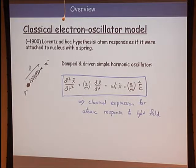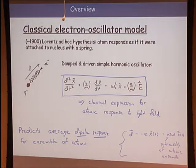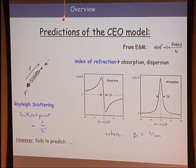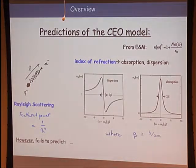This gives us a damped and driven simple harmonic oscillator equation. This simple model accounts for many phenomena, especially off-resonance ones. It predicts the average dipole response from an ensemble of atoms. From the displacement of the electron and classical E&M, we can derive the dipole moment, the polarizability of the atomic ensemble, and from that the index of refraction. The model also predicts absorption, dispersion, and phenomena like Rayleigh scattering—where scattered power goes as one over lambda to the fourth, scattering blue light more strongly.